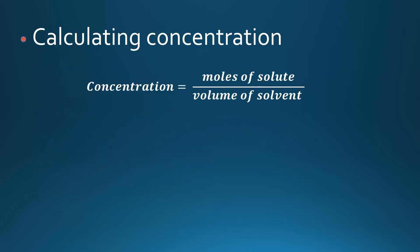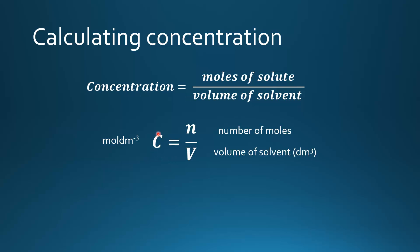Next we look at calculating concentration. Concentration equals moles of solute divided by the volume of solvent, or C equals N over V. C stands for concentration, and the unit for concentration is moles per decimeter cubed. N is number of moles, and V is volume of solvent in decimeters cubed.